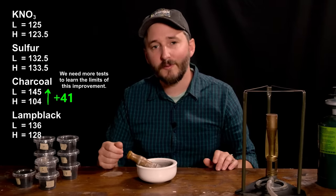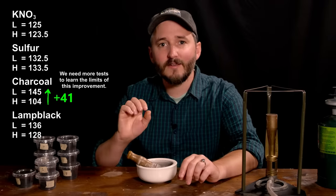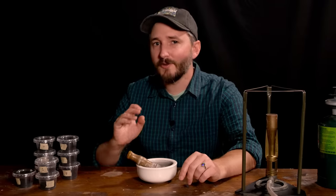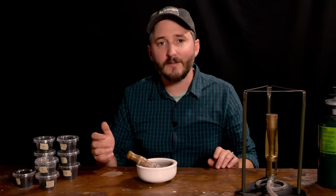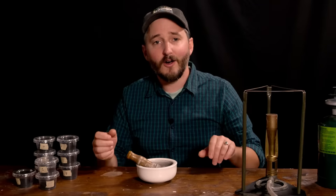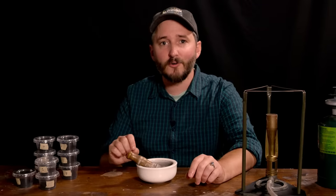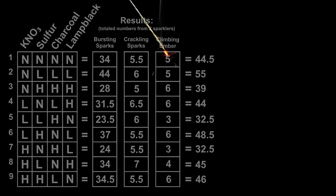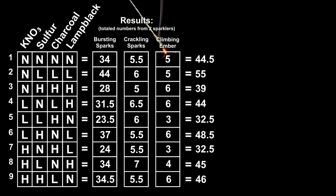One thing that this orthogonal array does not tell us is how far we can push the reduction in charcoal before things fall apart. I found that a significant reduction did offer improvements, but there's still a balance of burn rate that needs to be maintained. Also, I found that when I reduced the charcoal too much, I start losing the last stage of sparks. This is where going back to the test data can help in other ways.